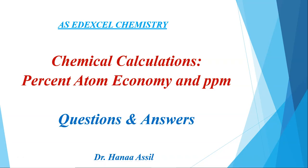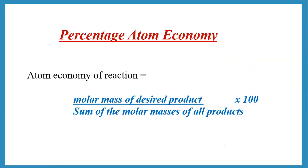Let's take a look at some questions regarding percent atom economy. First of all, you should know how to calculate percent atom economy. This is the molar mass of the desired product over the sum of the molar masses of all products times 100. To get the percent atom economy, we calculate from the equation the MR of the substance over the sum of the MRs of all the products times 100.